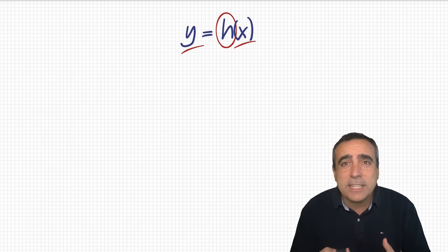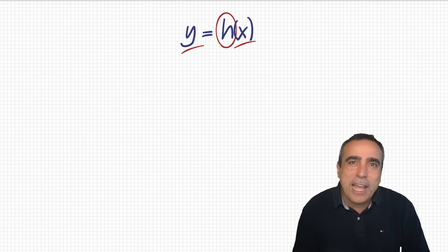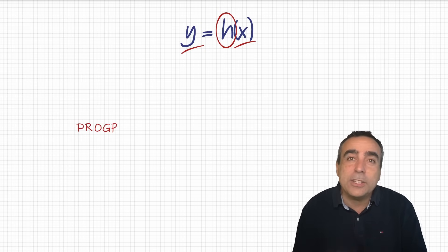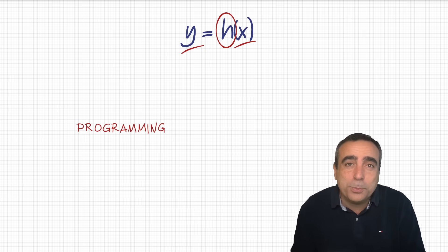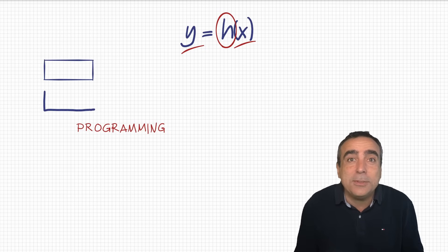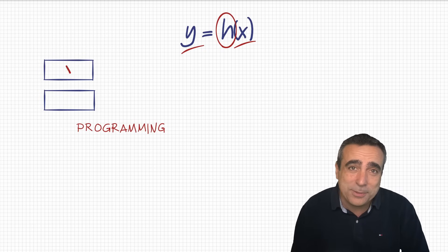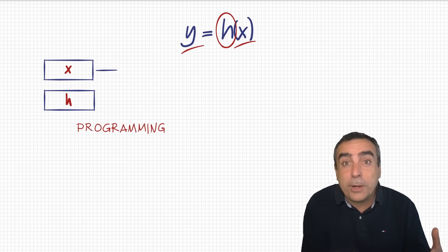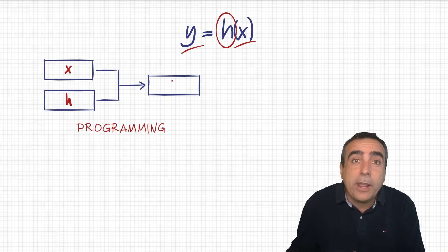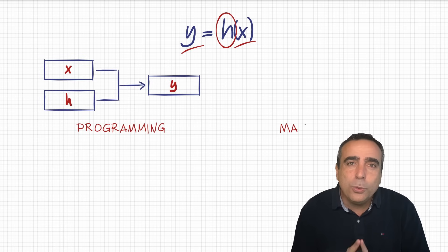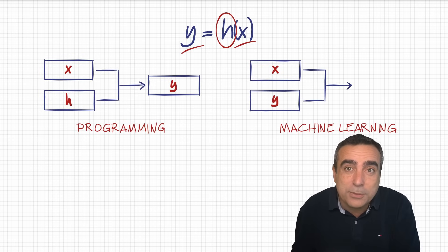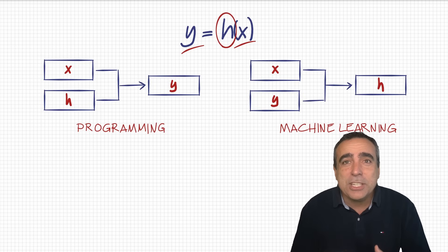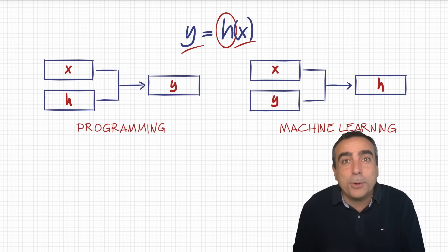It's called h because it's the hypothesis function — it's guessing that output. In traditional programming, you would develop a program implementing that function h. You'd need to find an algorithm to predict your output, whether it's a sales forecast or identifying pictures of dogs and cats, which is quite difficult. But in machine learning, you won't be creating that function yourself. The machine takes examples of inputs x with their corresponding outputs y, and from those it guesses the hypothesis function h. The machine is learning by itself based on examples instead of being programmed manually.